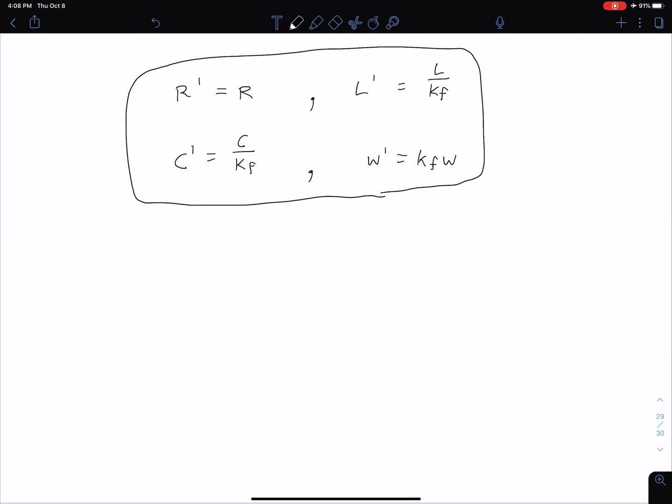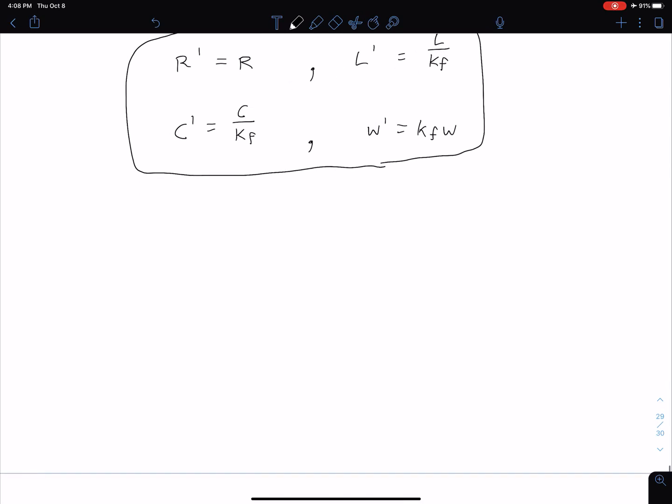If we consider a series or parallel RC circuit, the resonant frequency is 1 over the square root of LC. Let's look at our new resonant frequency omega₀'. This will be 1 over the square root of L' C'.